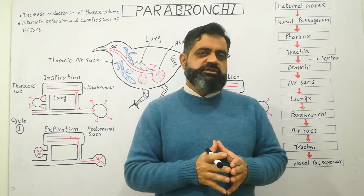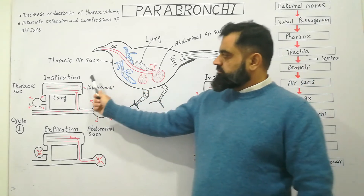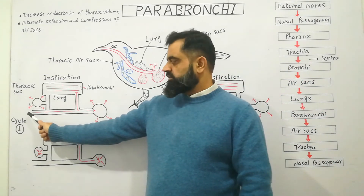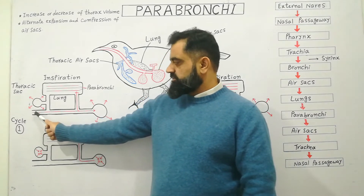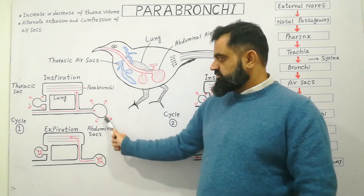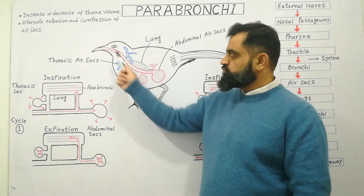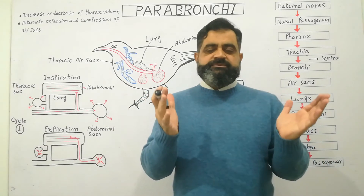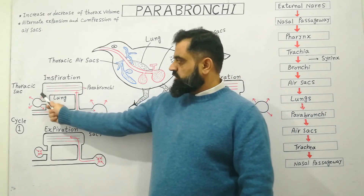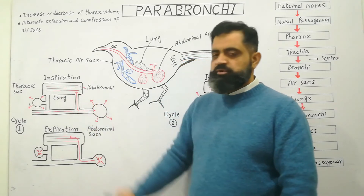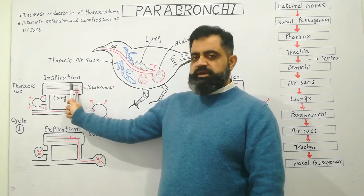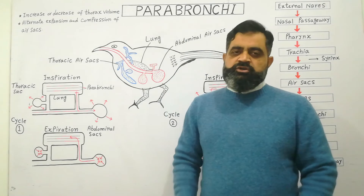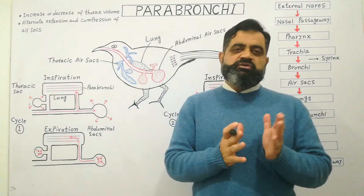Let's discuss the exact mechanism of respiration with the help of a diagram. This shows the external opening of air from the external nares. Air moves into the nasal passageway and reaches the abdominal sac. So fresh air from the nose reaches the abdominal sac, causing it to expand. At the same time, the lungs — which contain small tubes known as parabronchi — move air from the lung region into the thoracic sacs. The respiration of birds completes in two cycles.